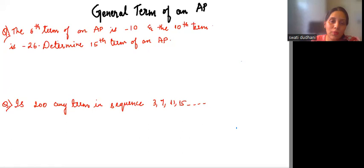The sixth term of an AP is negative 10. So A6 is equal to A plus 5D. We know the sixth term can be written as A plus 5D, which is equal to negative 10. I've also explained how to write the formula in just one second. And the 10th term is negative 26. So A10 equals A plus 9D which equals negative 26. Find the 15th term.